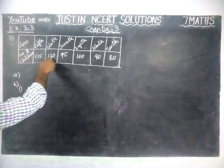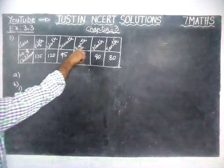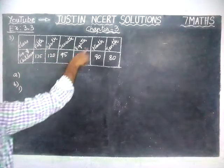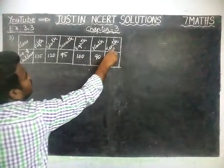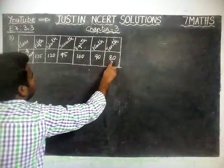6th — 120, 7th — 95, 8th — 100, 9th — 90, 10th — 80.